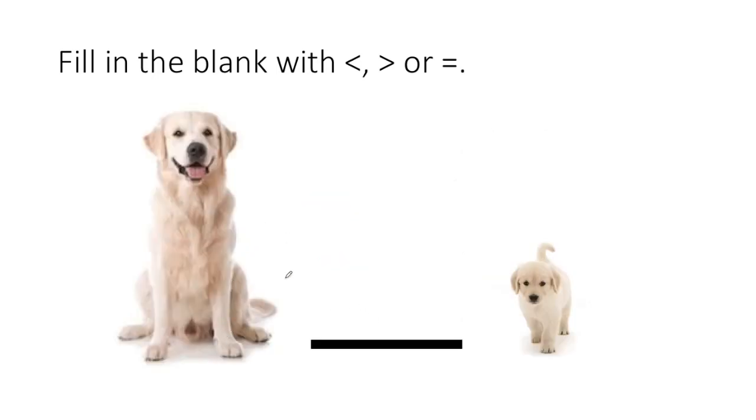Here are Bruno's friends. And we can fill in the blank again. The size of the big dog is greater than the size of the little dog. So now we use the other symbol going the other way. This symbol means greater than.